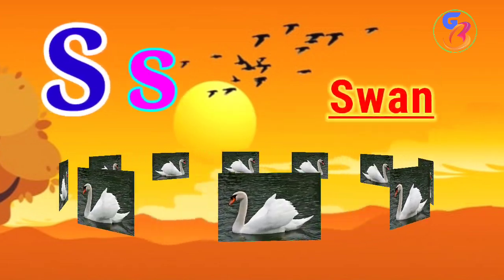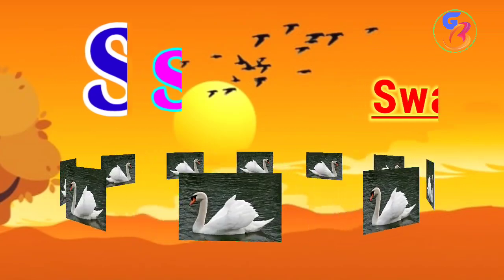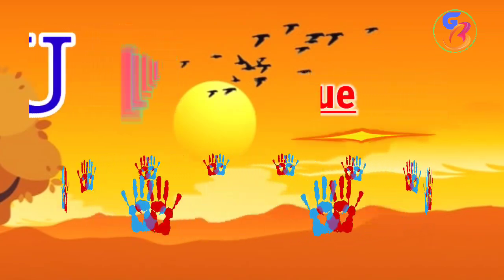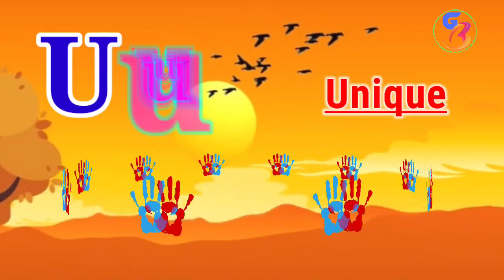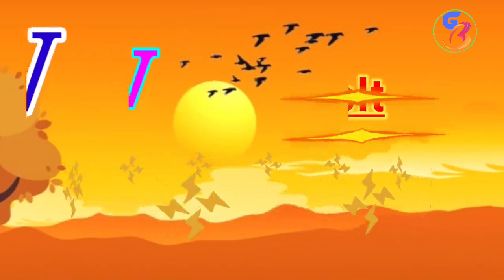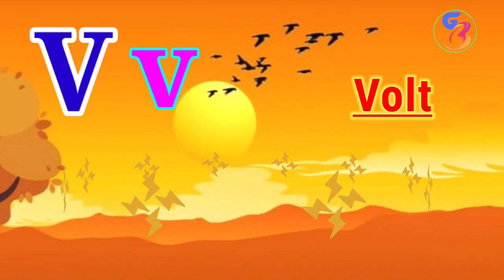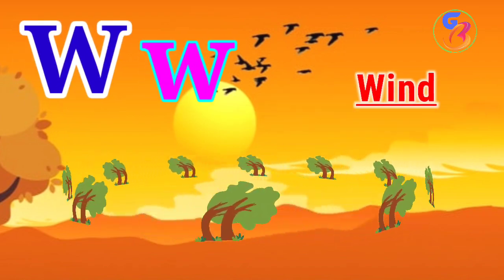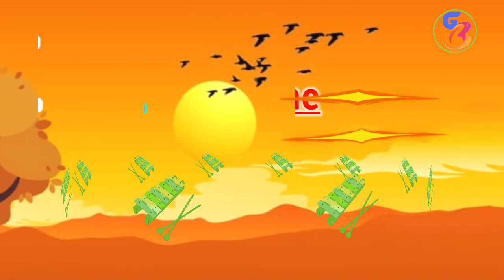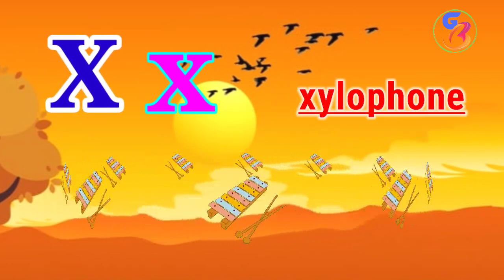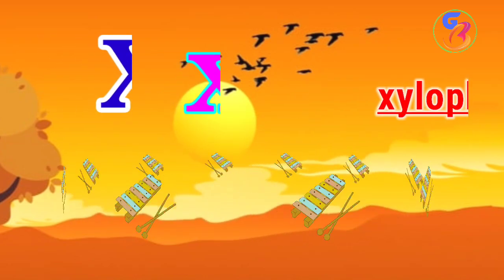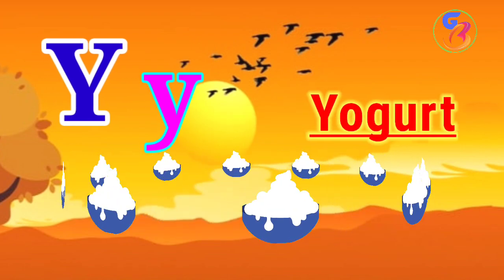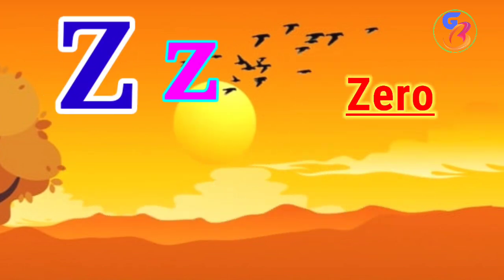S for sun. T for turtle. U for unique. V for bald. W for wind. X for xylophone. Y for yogurt. Z for zero.